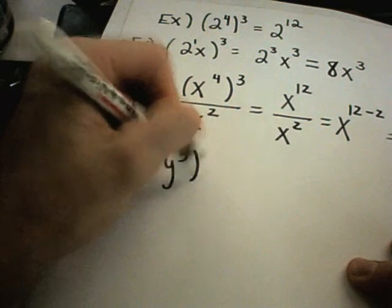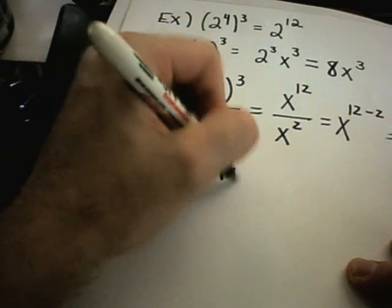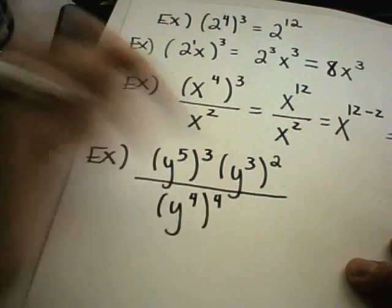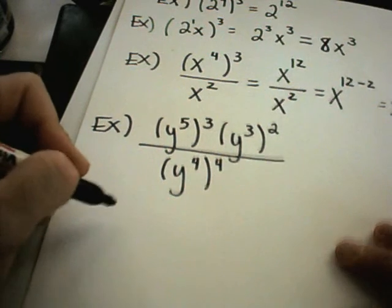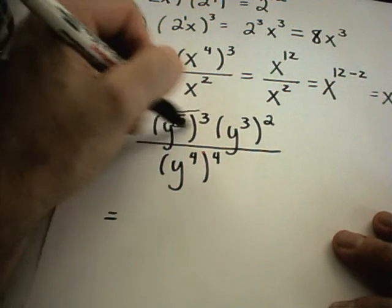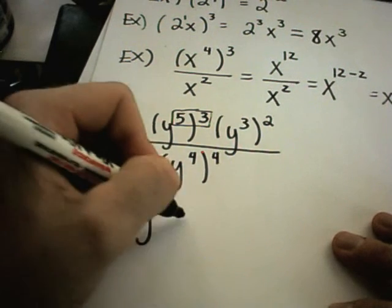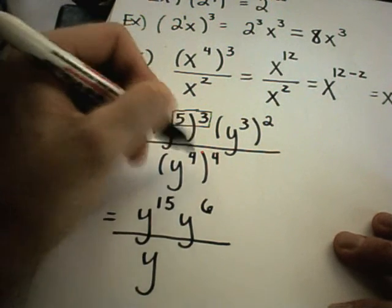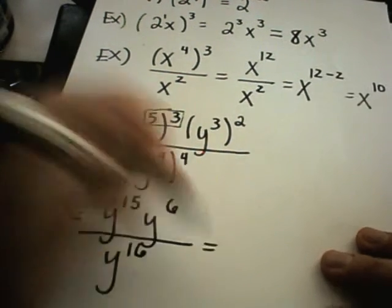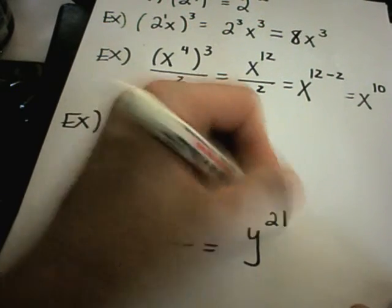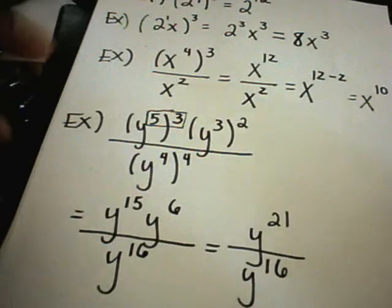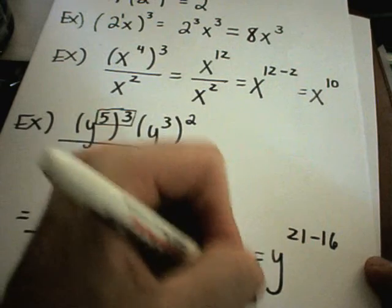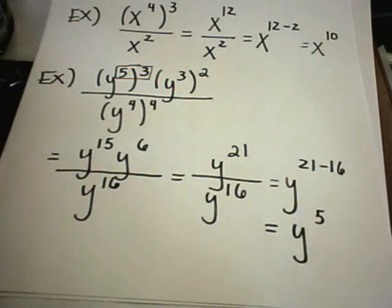Suppose I have y to the fifth raised to the third, times y to the third squared, all divided by y to the fourth raised to the fourth power. Simplifying the numerator: 5 times 3 gives y to the 15th, and 3 times 2 gives y to the sixth — combined that's y to the 21st. In the denominator, 4 times 4 is y to the 16th. Using the cancellation property, 21 minus 16 gives y to the fifth as the final answer.